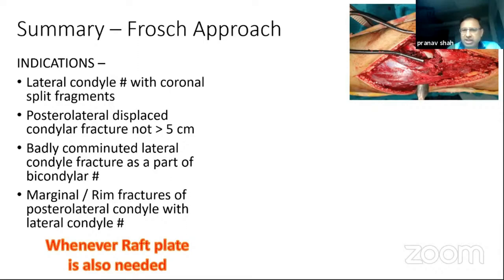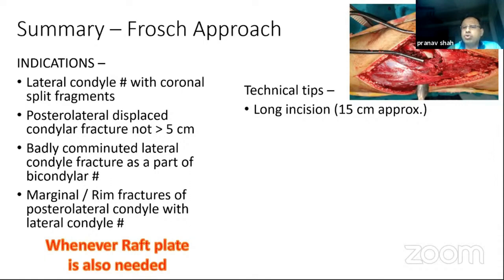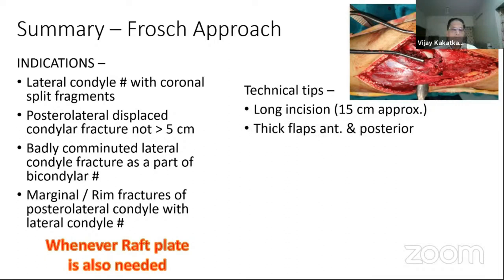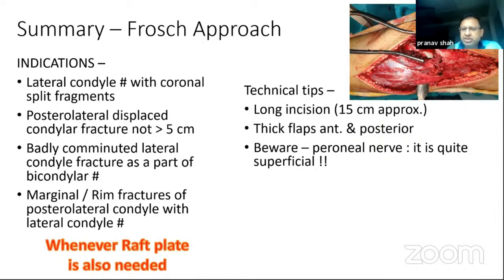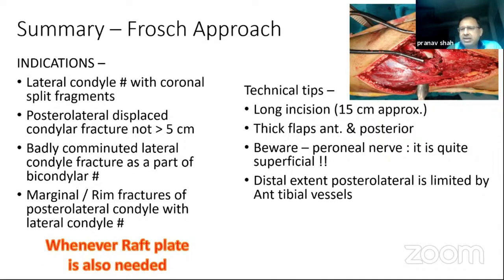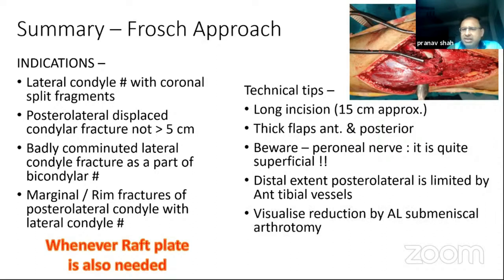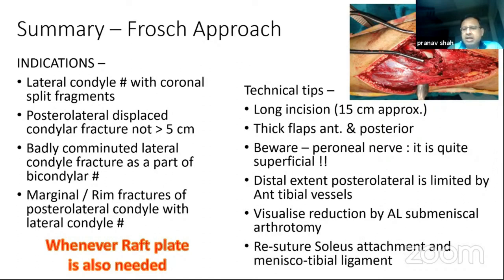Technical tips: a long incision is recommended to avoid excessive stretch on retraction. Raise thick anterior and posterior flaps. The peroneal nerve is quite superficial, so be gentle with the incision. The distal extent is limited by the anterior tibial vessels — watch out and don't damage them. Visualize the reduction through the anterolateral arthrotomy, not from behind. Finally, re-suture the attachments of the soleus and the meniscotibial ligament.